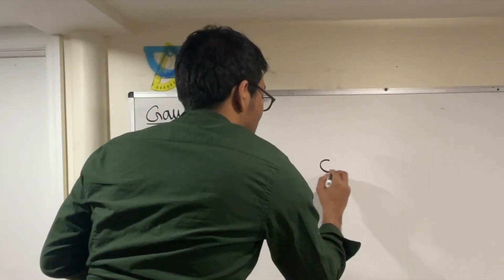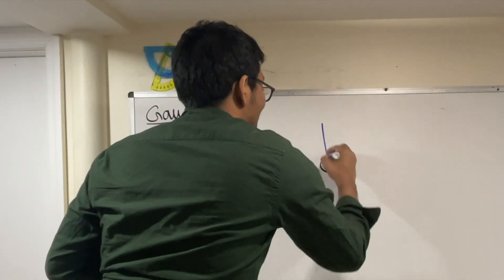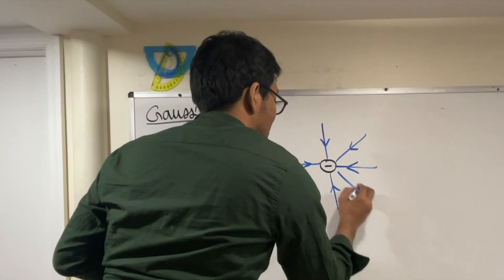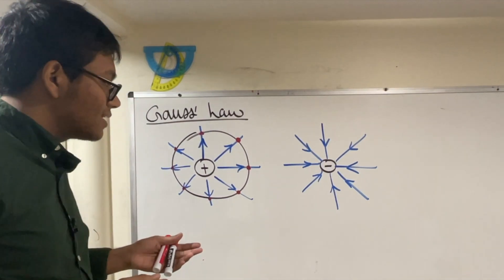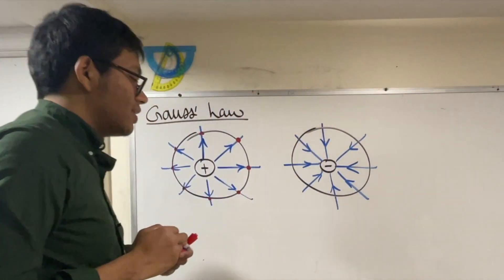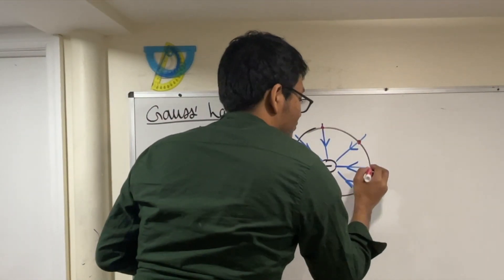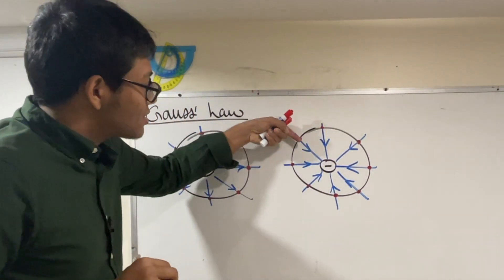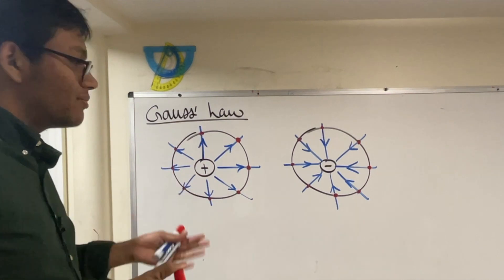Now, what if instead of a plus charge, you have a minus charge? What do the electric field lines for a minus charge look like? Well, they're radially inwards. So this time it looks exactly like the plus charge, but now they're coming in instead of going out. Gauss comes in, looks at this, and thinks: what if I put a circle here? Each one of the electric field lines crosses the circle — but this time they're going in. What's the big deal? Well, it's coming.